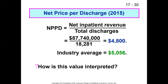Another example is net price per discharge. Here you estimate the average price by asking: what is our net inpatient revenue? We use net here, not gross — because gross would be the amount on our charge master, which as we've discussed is really just basically funny money. We know we're never going to get that much. So net inpatient revenue is our inpatient revenue adjusted for contractual allowances and charity care, divided by total discharges. Our nominal organization has made an average of $4,800 per discharge.